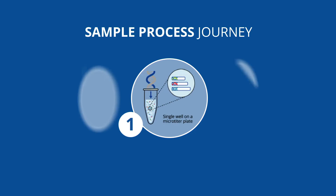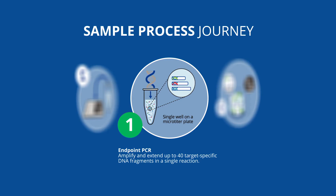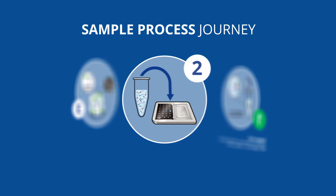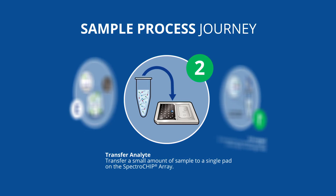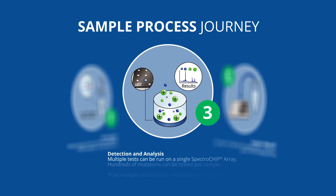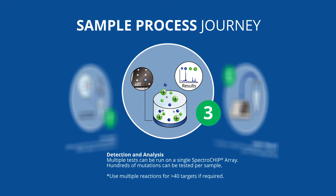Sample analysis on the mass array system is composed of three straightforward steps. First, perform PCR amplification. Next, transfer the analyte to one of Agena Bioscience's patented spectrochip arrays. Finally, detect and analyze your results using the mass array analyzer and easy-to-use software.